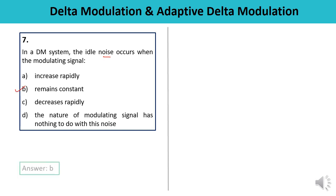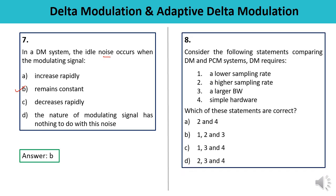So the answer to Question 7 is B — the modulating signal remains constant. Question 8: Consider the following statements comparing DM and PCM. Statement 1: DM requires a lower sampling rate — this is not correct. Statement 2: DM requires a higher sampling rate — yes, this is correct. Statement 3: DM requires a large bandwidth — no. Statement 4: DM requires simple hardware — yes. Out of these four, statements 2 and 4 are correct, meaning higher sampling rate and simple hardware. So the answer is A.